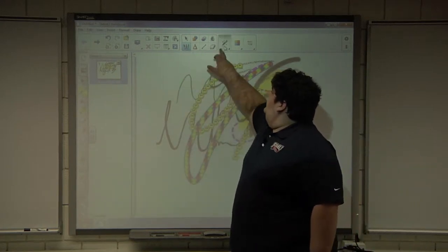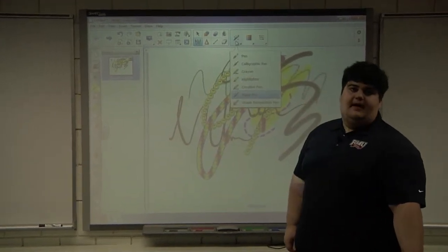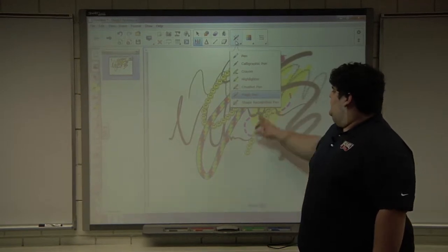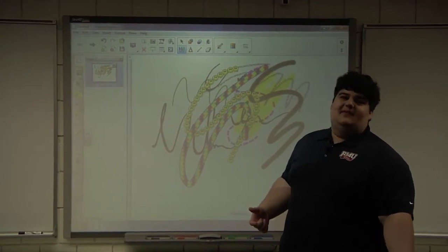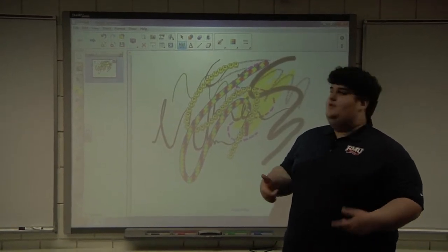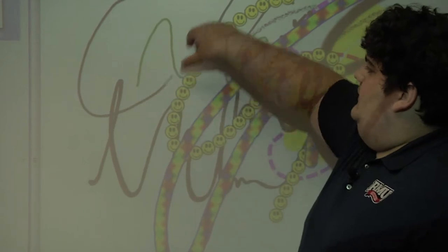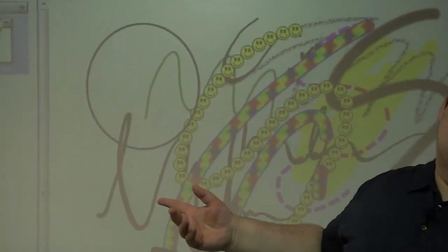The last and probably one of the more cool pens is the shape recognition pen. If I click on that it's going to basically just recognize the shapes I want and actually make them right. So I really suck at drawing circles. So I'm going to draw my circle here. It's going to make it a perfect circle. Easy enough.